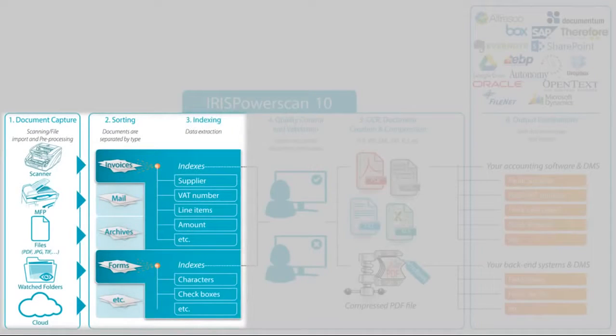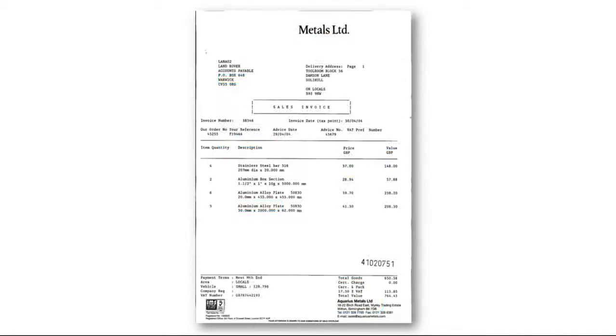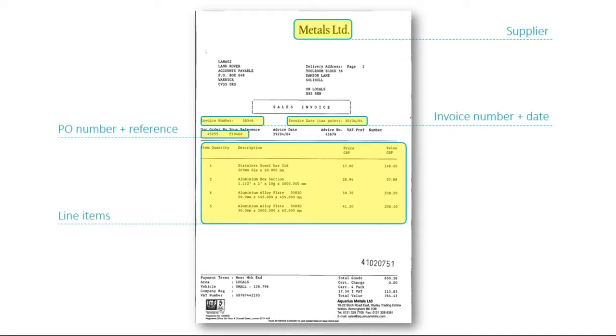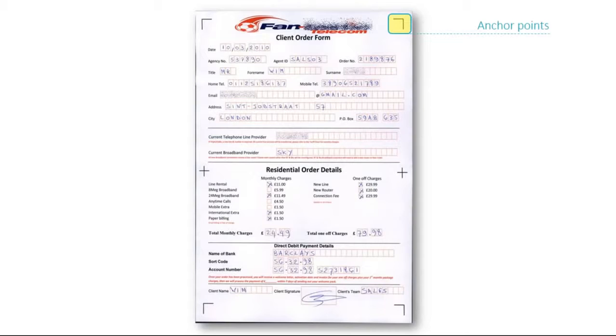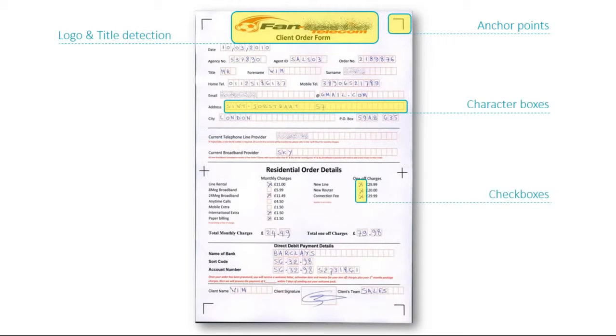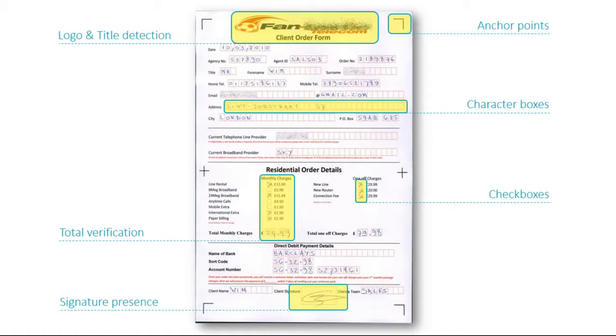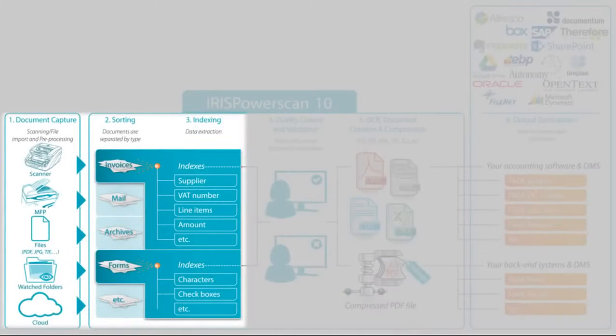Indexing. More recognition technologies are used to extract key data such as references, dates, numbers, names, departments, or anything you might need to recover from your scans. Iris PowerScan 10 can also be complemented with optional invoice and form indexing modules for fast and accurate classification, indexing of accounting or form data, user validation, and export to accounting systems or any other data-driven system.